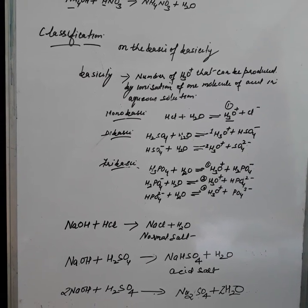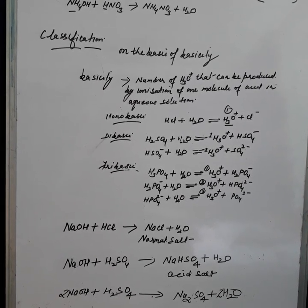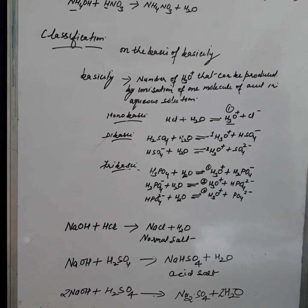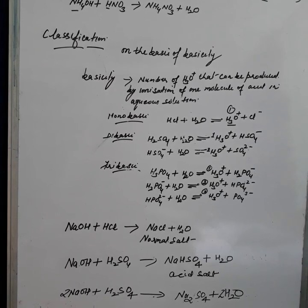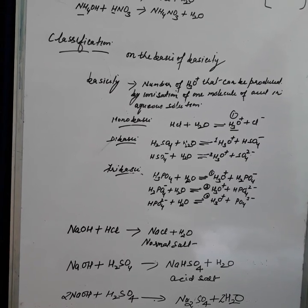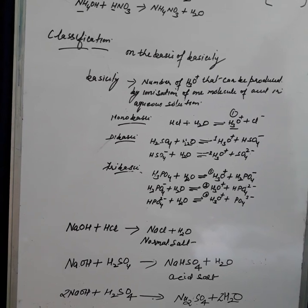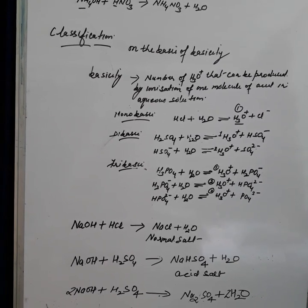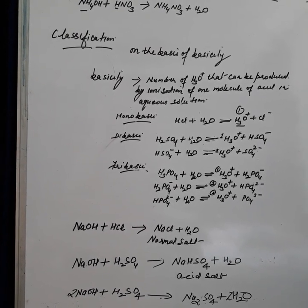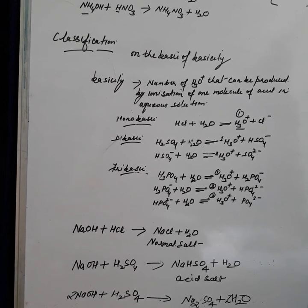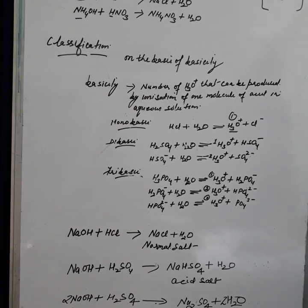Dibasic acids contain two replaceable hydrogen atoms. Examples include sulfuric acid, carbonic acid, and sulfurous acid. When they dissolve in water they produce two hydronium ions, and ionization is completed in two steps. For example, sulfuric acid dissolves in water to form one hydronium ion plus hydrogen sulfate ion in the first step, and then hydrogen sulfate dissolves again to form another hydronium ion plus sulfate ion in the second step.